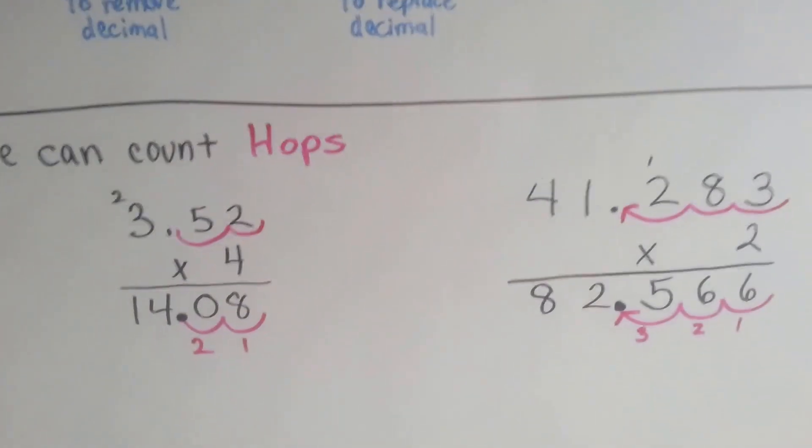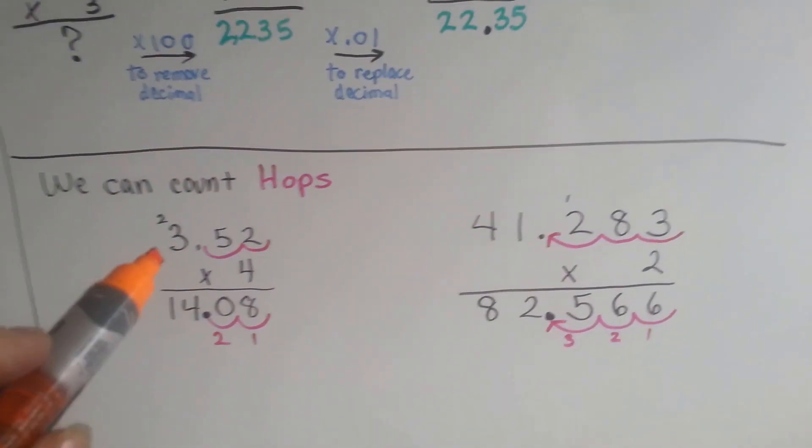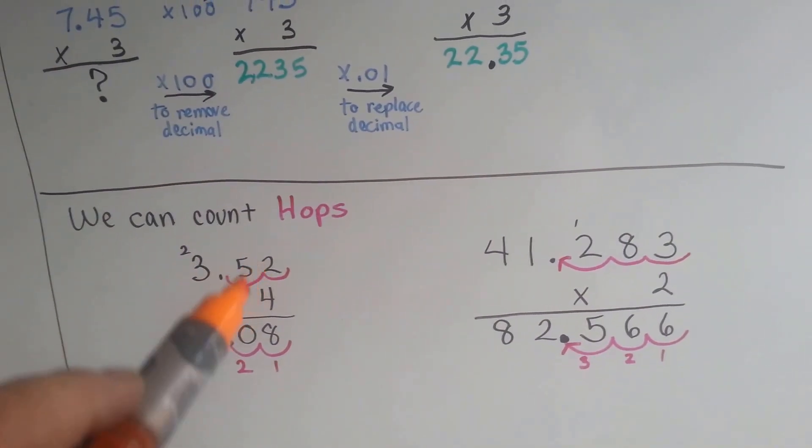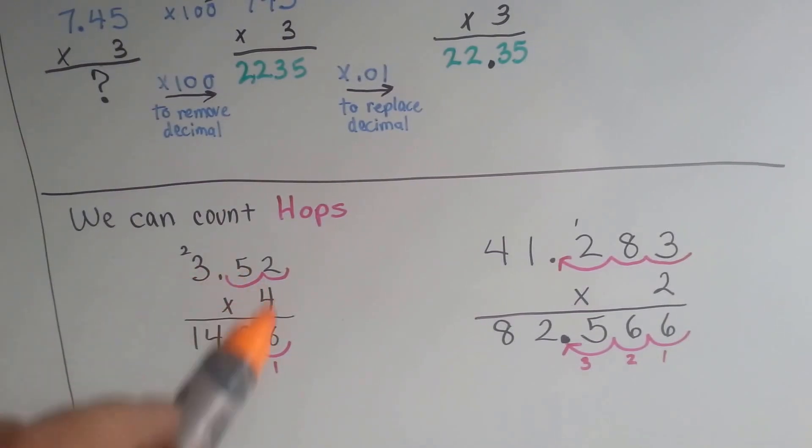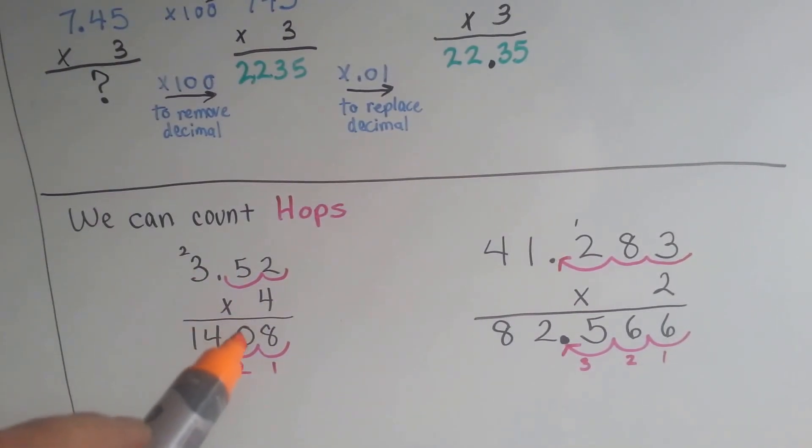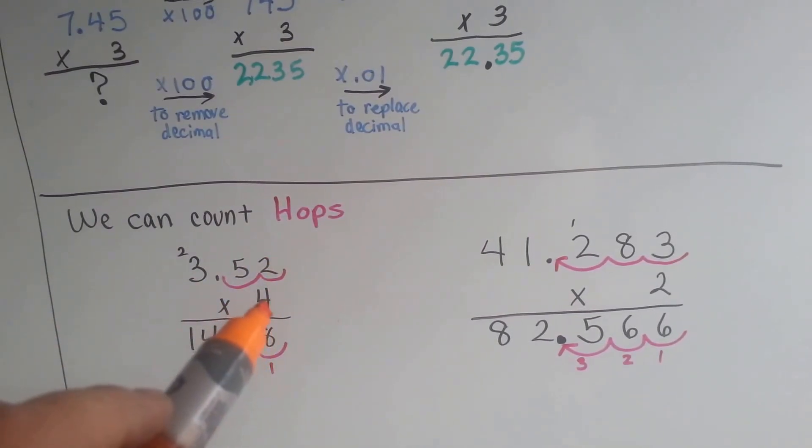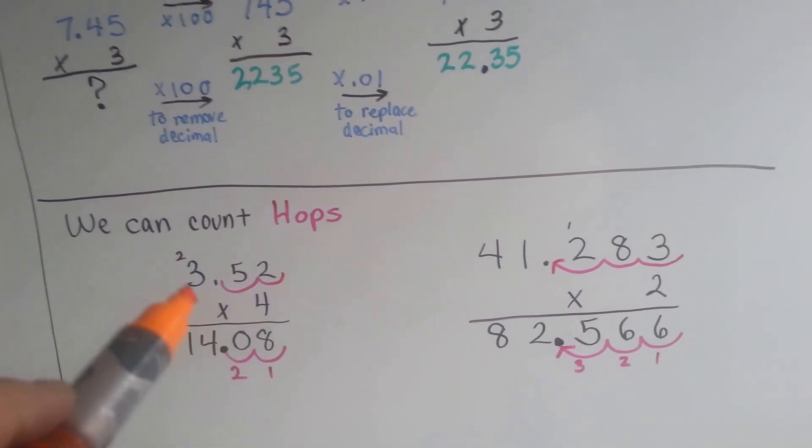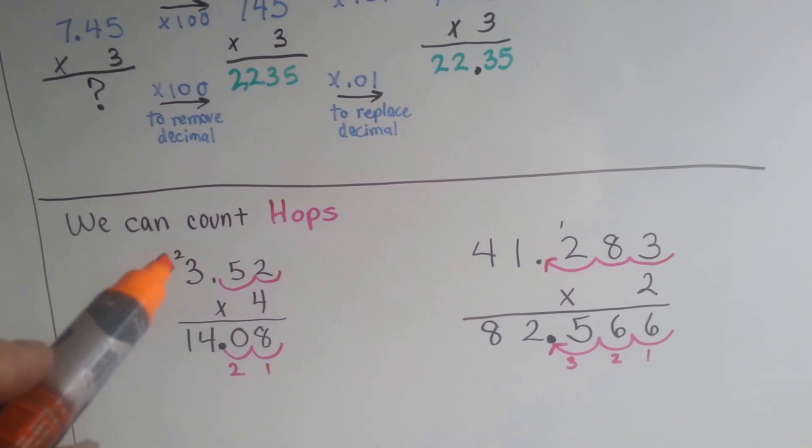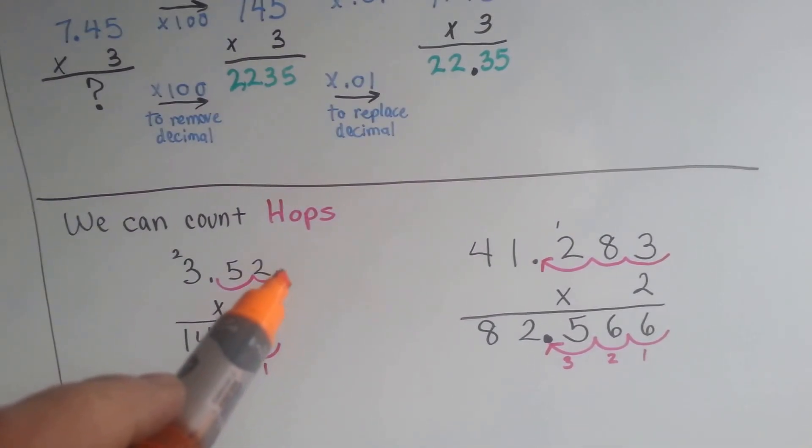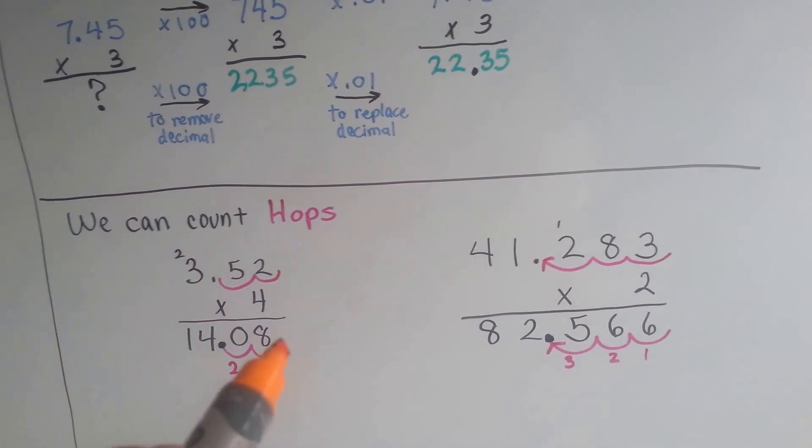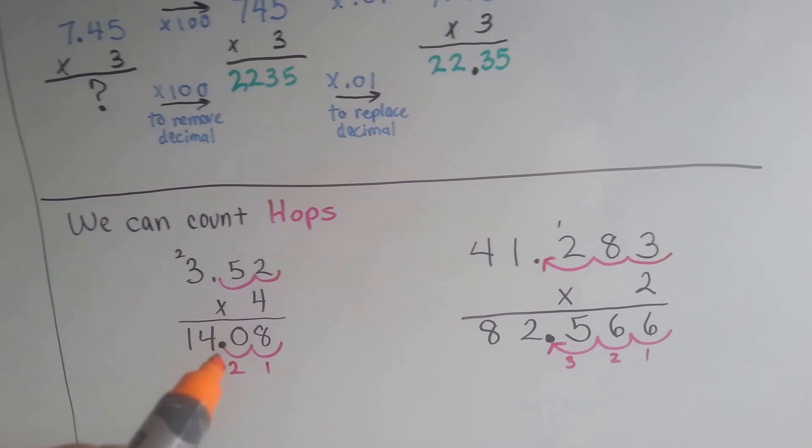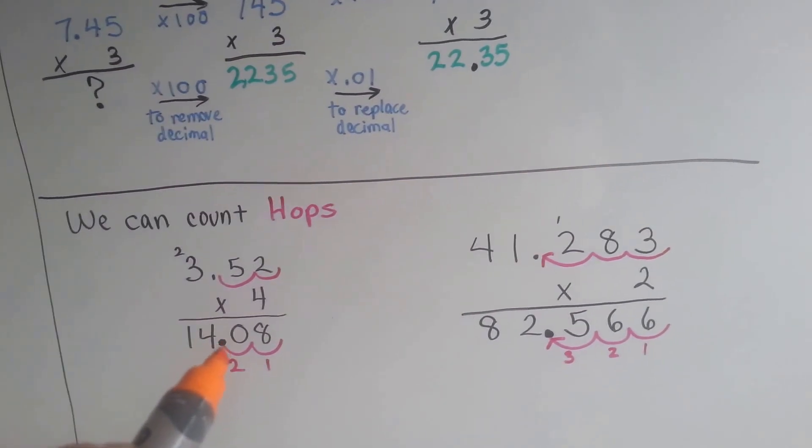We can also count hops. If we had 3 and 52 hundredths times 4, we could do it like a regular multiplication problem, and do 4 times 2 is 8, 4 times 5 is 20, carry the 2, put the 0 down, 4 times 3 is 12, plus 2 more is 14. Count the hops: 1, 2, 1, 2. And then we know that the decimal point goes right there between the 4 and the 0.